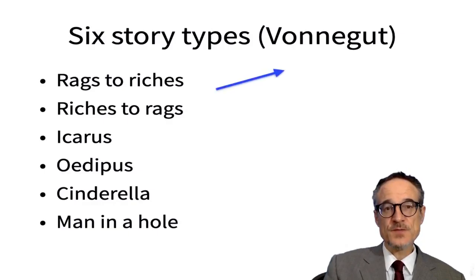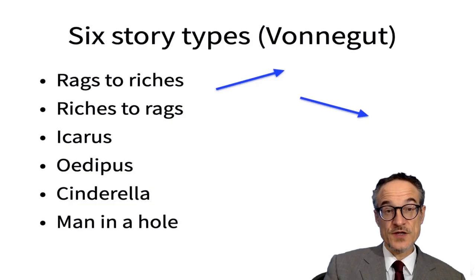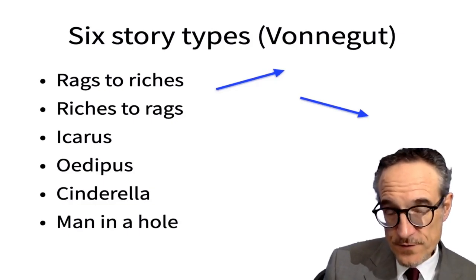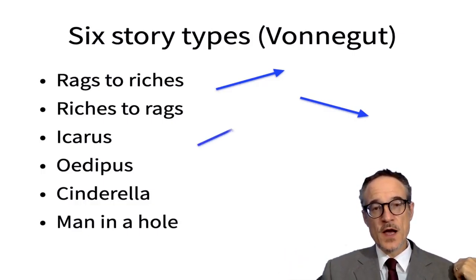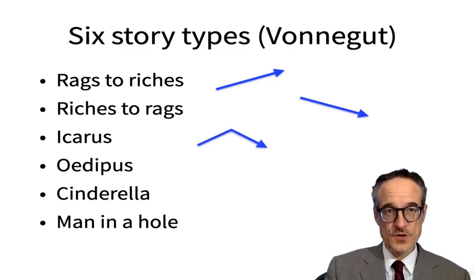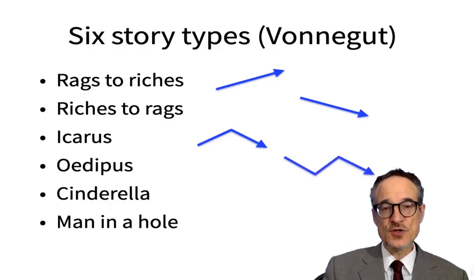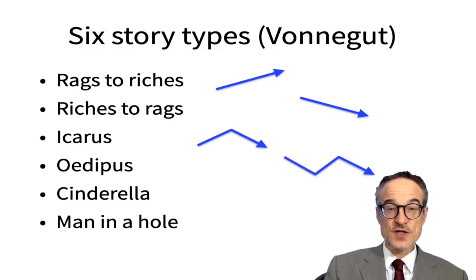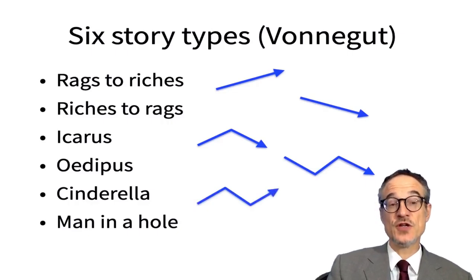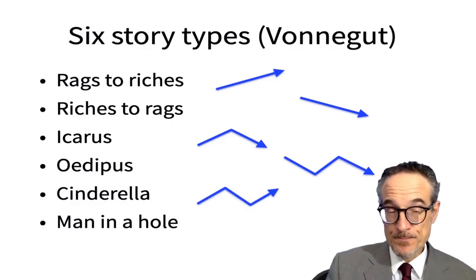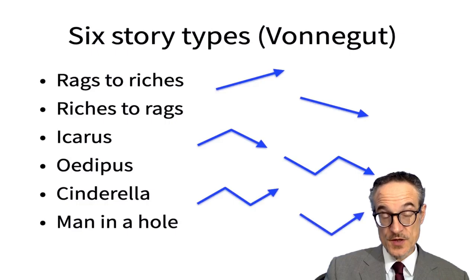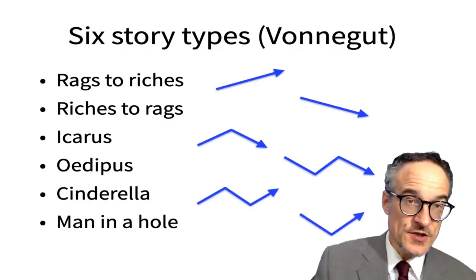Rags to riches: things just get better throughout the story. Riches to rags: things just get worse throughout the story. Icarus — from Greek myth — he put feathers on his arms and tried to fly to the sun, the wax melted and he fell down again, so this is a story that gets better and then gets worse. The Oedipus story, another Greek character: things get worse, then better, then worse again. The Cinderella story is the opposite: things get better, then worse, then better again. And finally, A Man in a Hole — it doesn't need to be a man or a hole — basically things get worse at the beginning and then get better again. These are types of stories to think about when planning your plot.